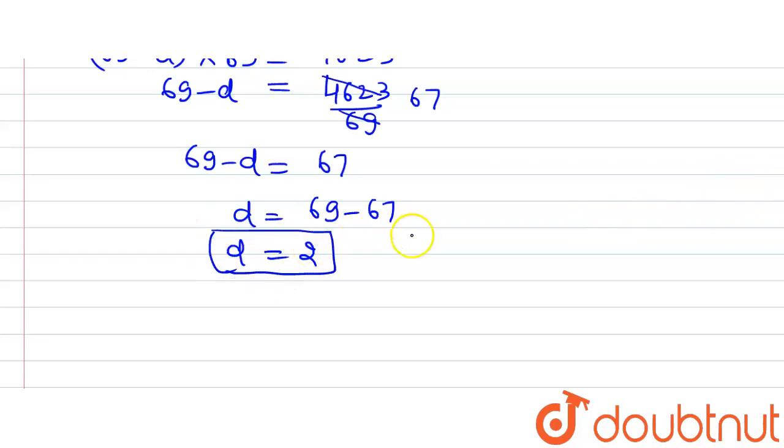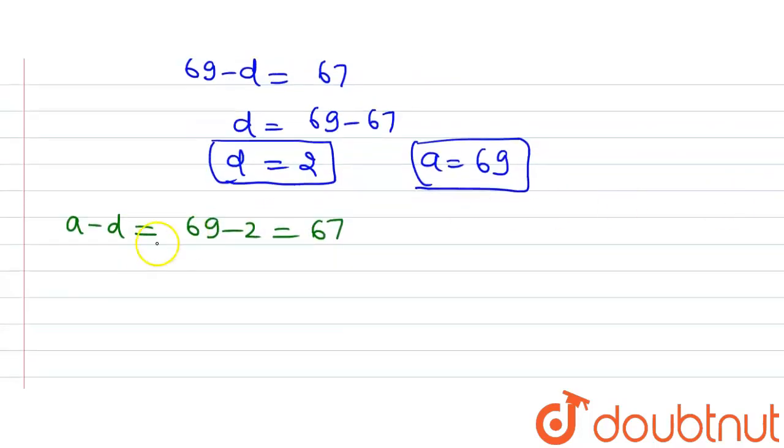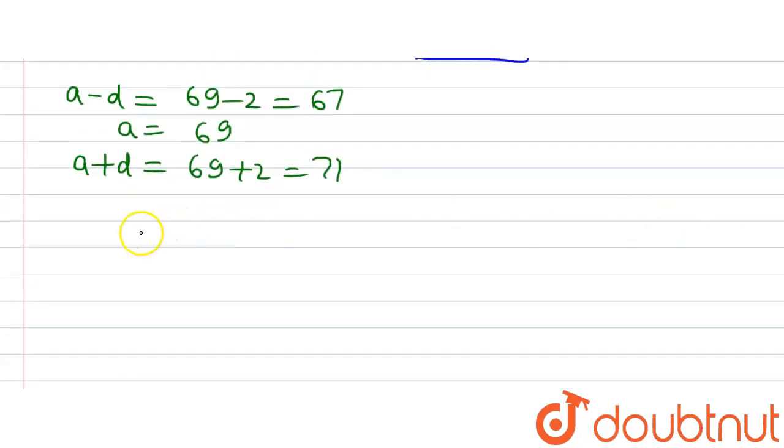We have A is equal to 69. Now we can find out our terms. So the first term is A minus D. We can write A minus D, that is 69 minus 2 is equal to 67. So the three terms into which 207 has been split is 67, 69 and 71.